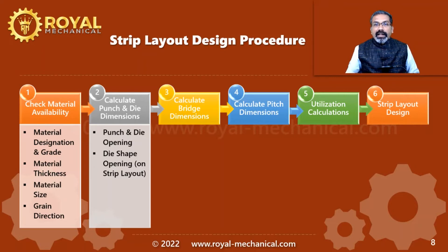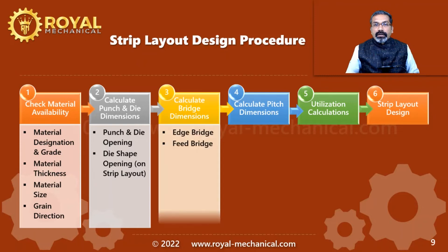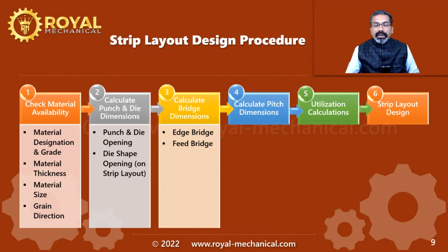Step three is to calculate the bridge dimensions. Extra raw material is essential all around the punch for the shearing to happen. This extra raw material all around the punch is referred to as the bridge. We need to calculate the dimension of this bridge in this step.